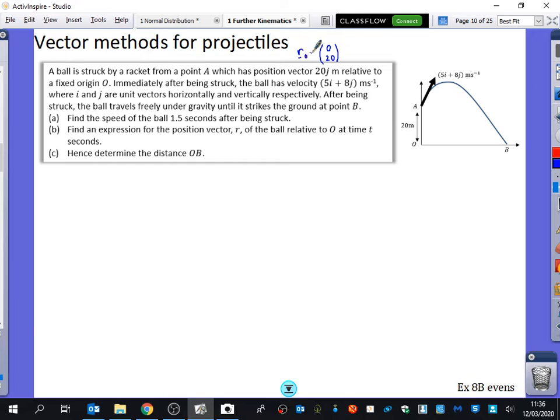What do you think this position vector should be called? I'm going to call that R₀, because that's where it starts, relative to a fixed origin O. Immediately after being struck, the ball has velocity 5i + 8j. I'm going to call that u, which is (5, 8).